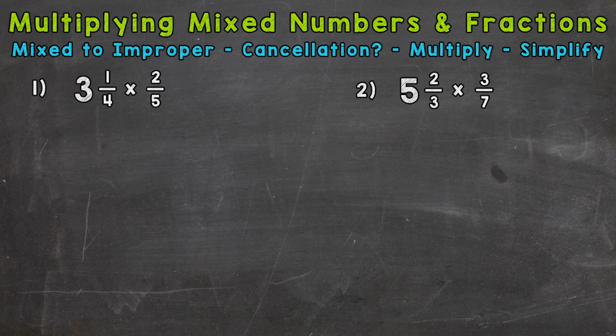So we do that by starting at the bottom and working our way up. We multiply and then add. So four times three is 12, plus one is 13. We keep our denominator of four the same. So 13 fourths is equivalent to three and one-fourth. We didn't change the value of the problem at all. We just changed to an improper fraction.